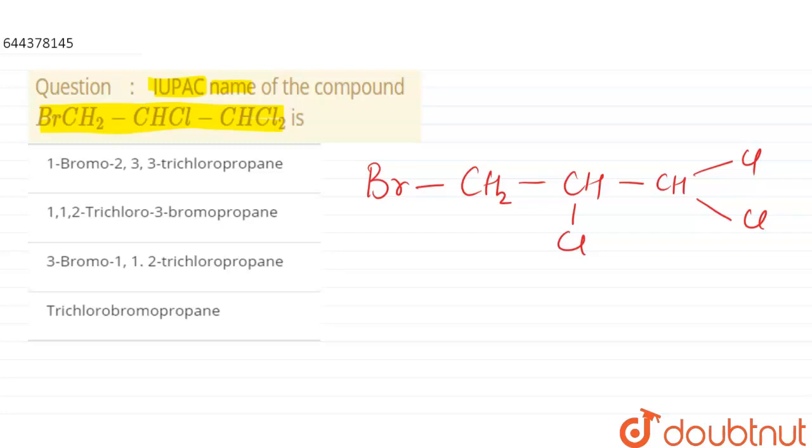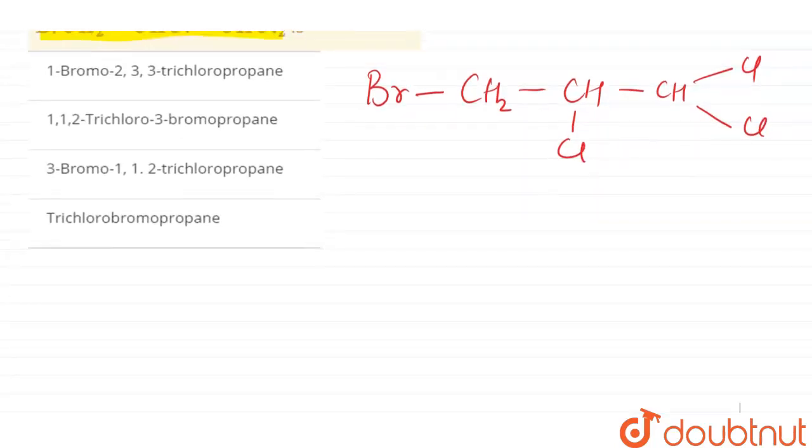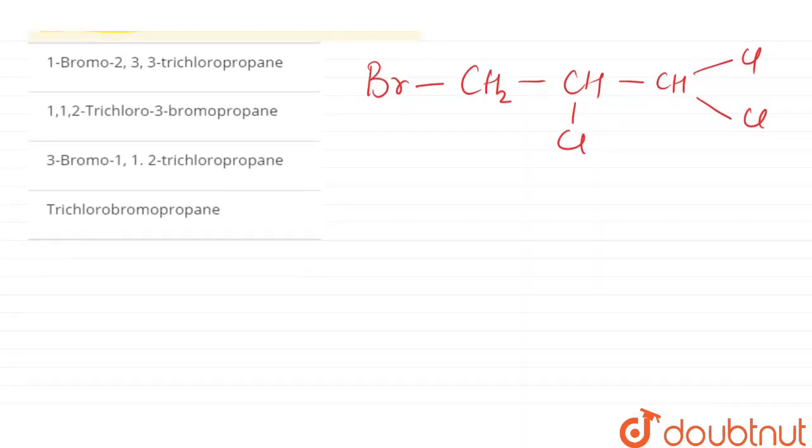So for that we should start numbering. Where should we start numbering? Here, as you can see, all three carbon atoms have substituents. According to IUPAC rules, the more substituted carbon...